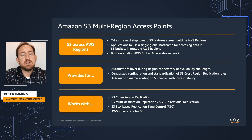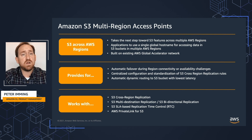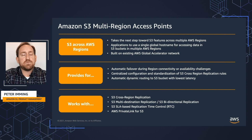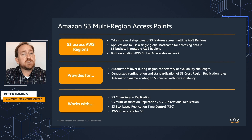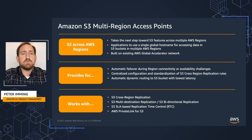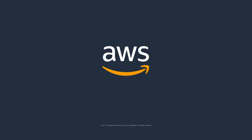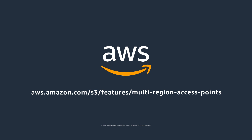Multi-region access points take us to a new level for operating across multiple AWS regions. This capability gives you a new global hostname for your clients, provides improved operational resiliency across AWS regions, and delivers a performance benefit for both VPC and internet-based requests by on-ramping them across the AWS Global Accelerator network. We dynamically route requests to the bucket with the lowest latency, and failover is seamless with no additional configuration required. This technology also works with existing S3 features such as cross-region replication, multi-destination replication, bi-directional replication, replication time control, and S3 Private Link. Thank you for watching — please visit our multi-region access point feature page.